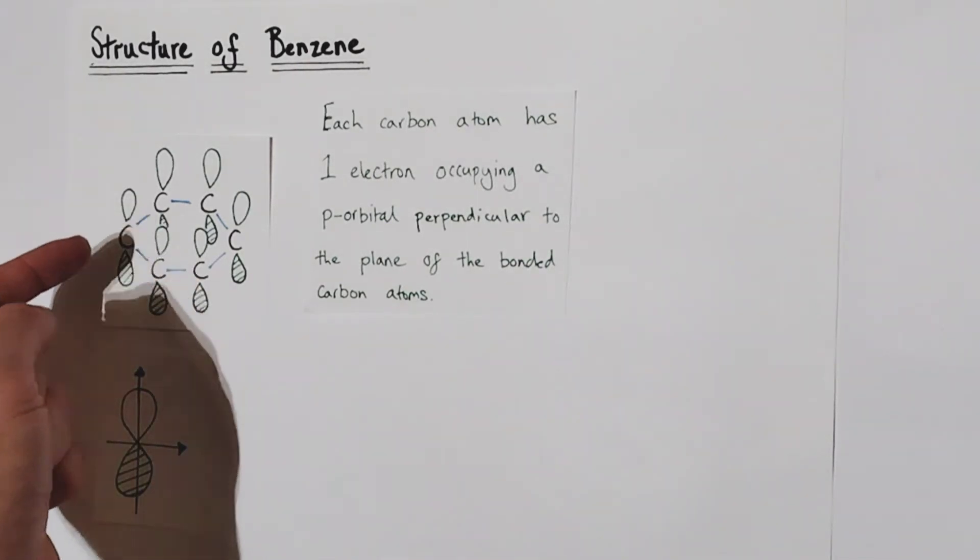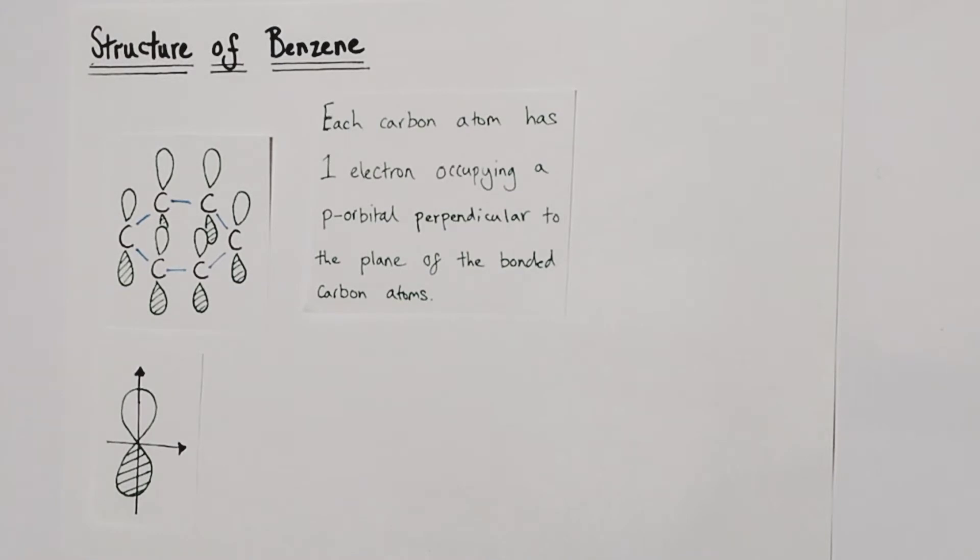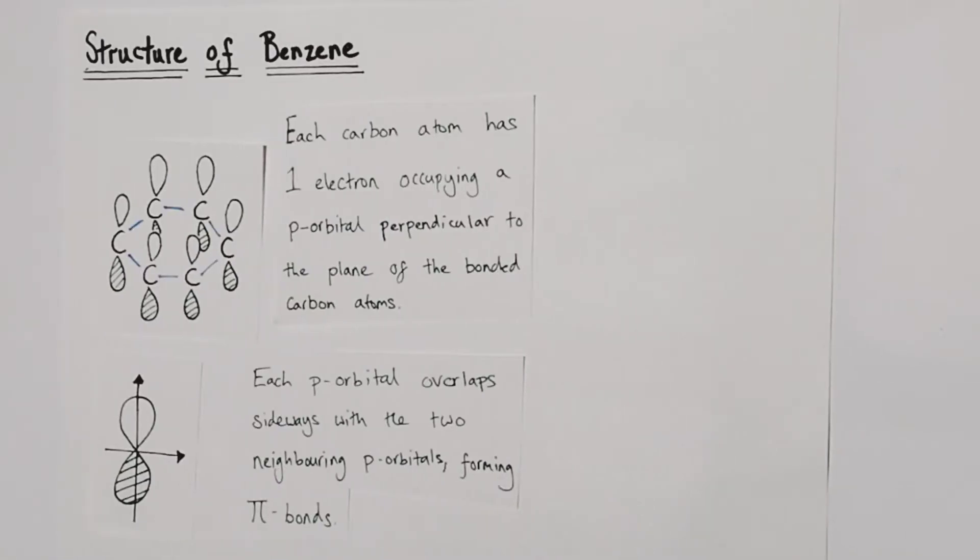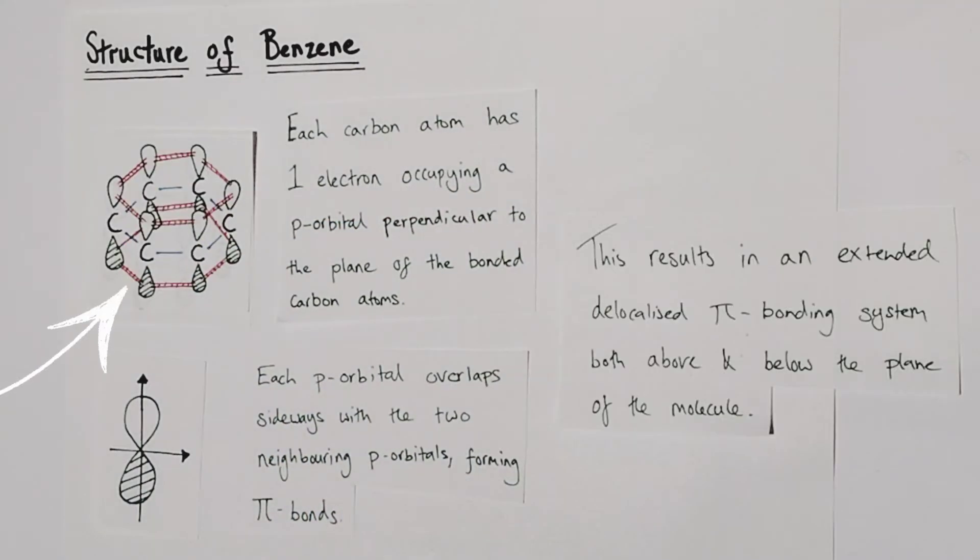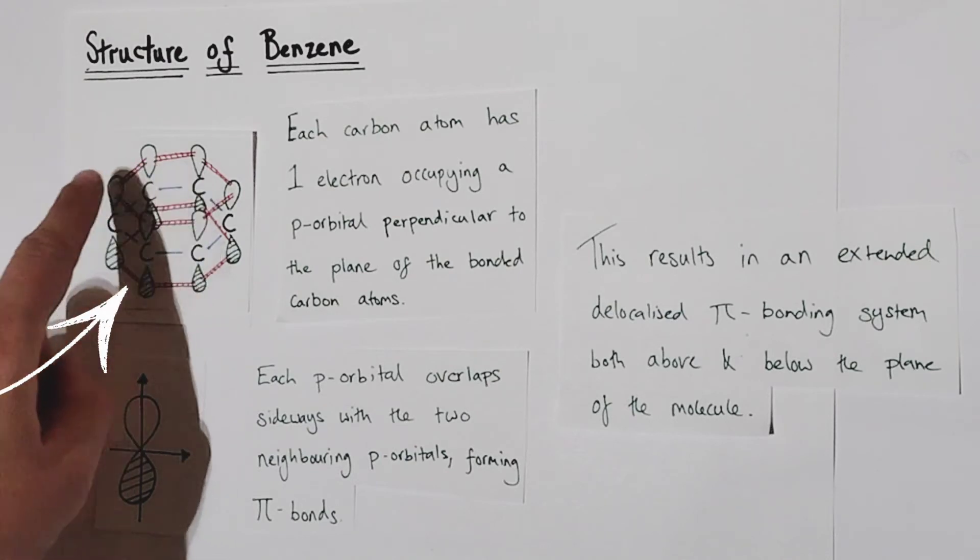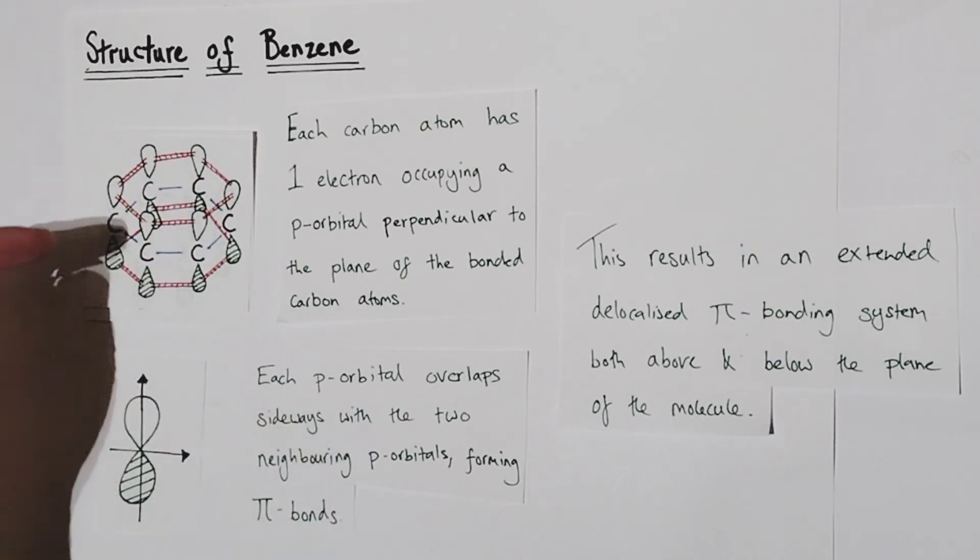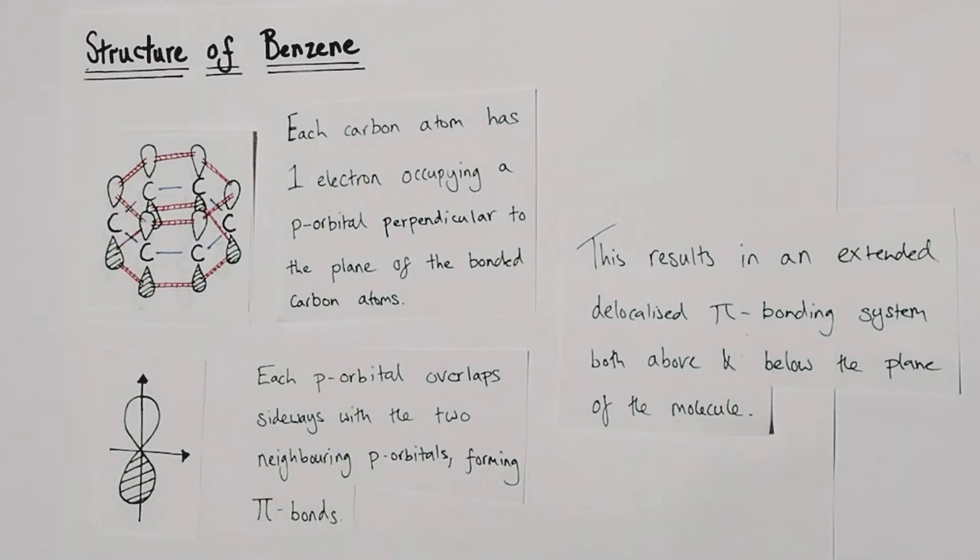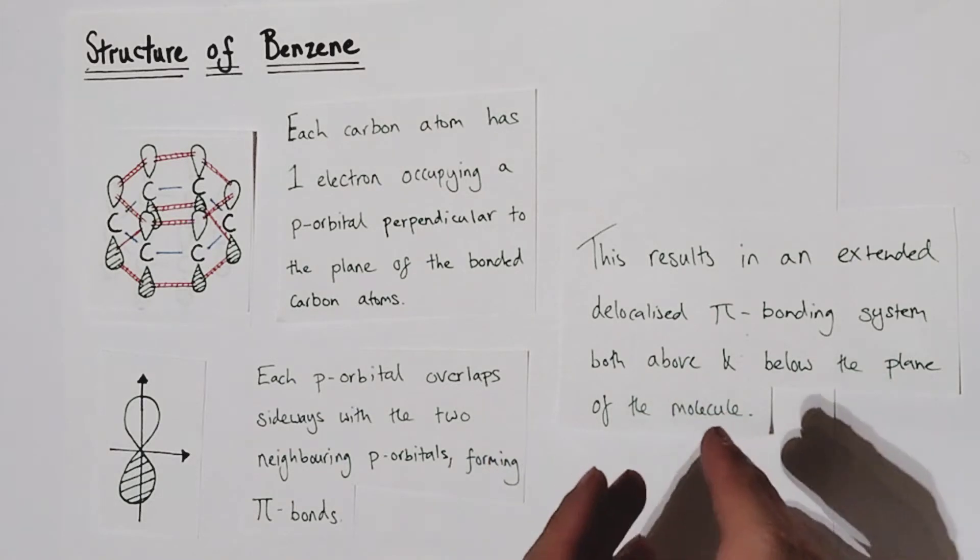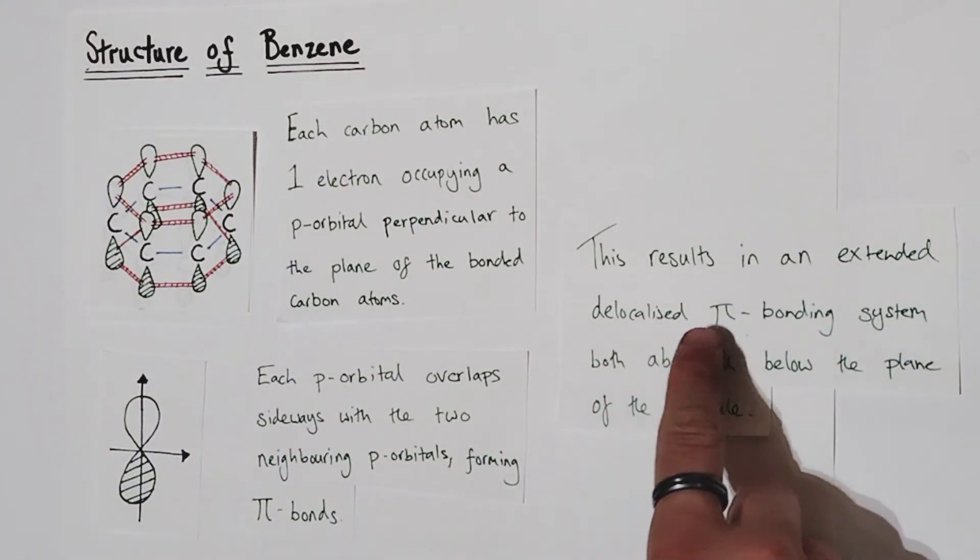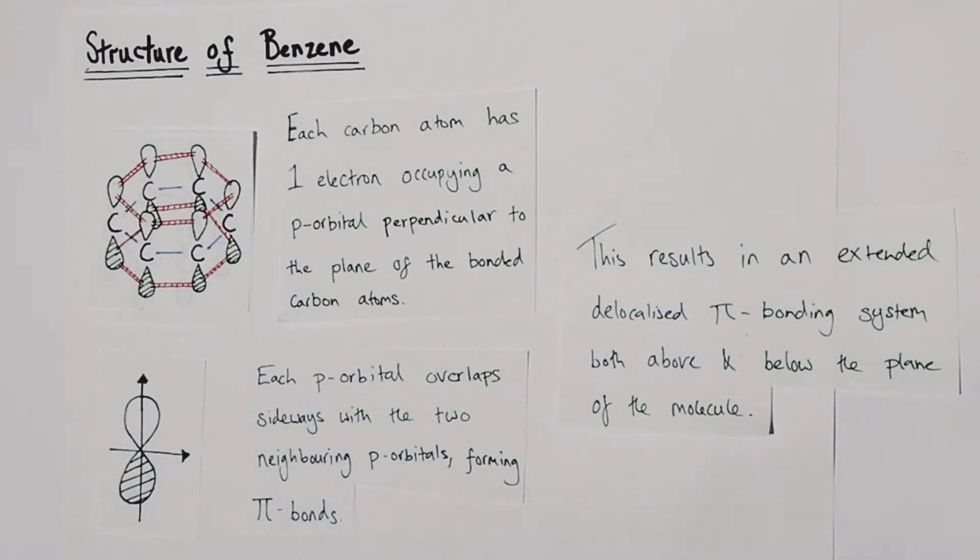In other words, these p orbitals are at right angles to the rest of the molecule. That's really important because this is what's going to create what is known as the delocalized ring structure of the benzene molecule. What can happen at this point is each p orbital overlaps sideways with the two neighboring p orbitals adjacent forming pi bonds, a bit like this. Now you can see we have those overlapping p orbitals either side of the carbons creating a continuous ring of electron density both above and below the plane of the molecule itself. So these lines represent the overlaps between the p orbitals creating a pi bonding system. This results in the creation of an extended delocalized pi bonding system both above and below the plane of the molecule otherwise known as a delocalized ring system.